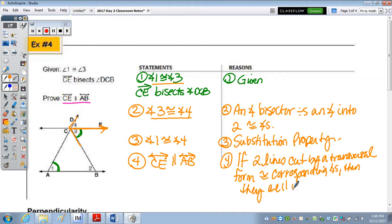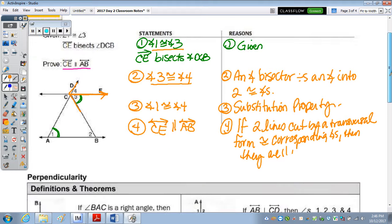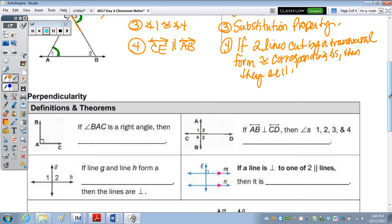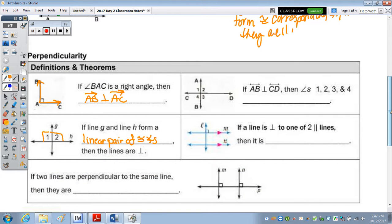The next four, this is really short for the next five boxes. It all has to do with perpendicularity. So if we look at the first one, it says if angle BAC is a right angle, if you're told you have a right angle in a picture, you can conclude the two rays are perpendicular. So that means ray AB is perpendicular to ray AC. I'm going to move straight down. If line G and H form a linear pair of congruent angles, where if they're congruent, they must both be 90. So therefore, the lines are perpendicular. And the next one, if I'm told they're perpendicular, then all four angles are right angles.